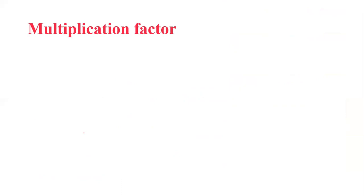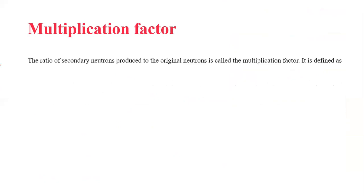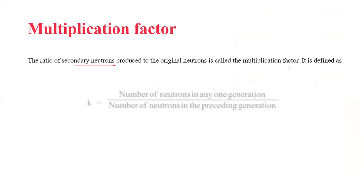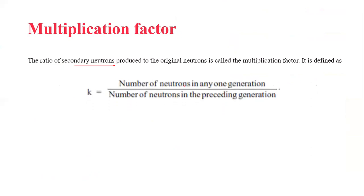Now, the multiplication factor. The ratio of secondary neutrons produced to the original neutron is called the multiplication factor. It is defined as the number of neutrons in any one generation divided by the number of neutrons in the preceding generation.